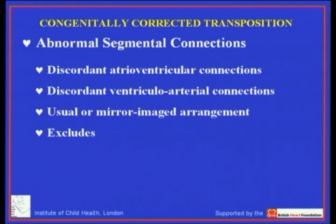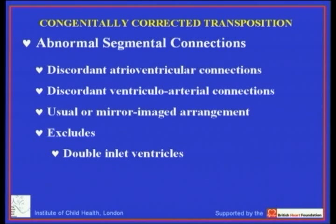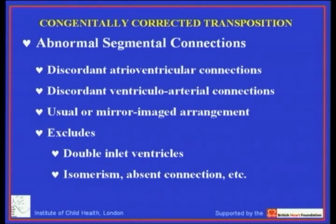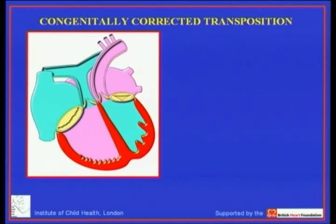Be aware that when we define congenitally corrected transposition in this fashion, we exclude cases of double inlet ventricle with anterior and leftward aorta, cases that have isomerism, absent connection, and strictly we would also exclude cases with double outlet right ventricle, although they are closely connected with congenitally corrected transposition.